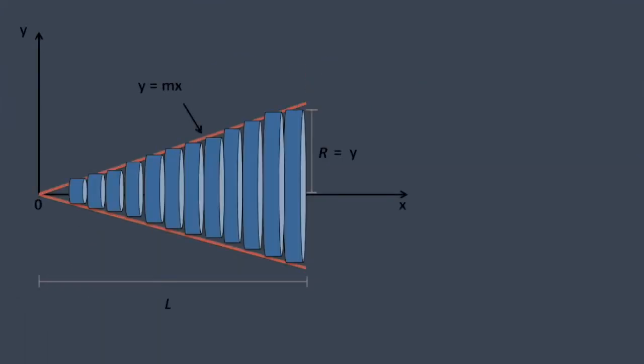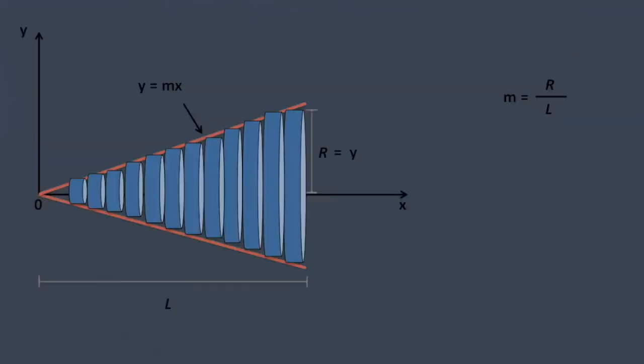A cone is very similar — it's also made up of a bunch of circles stacked together. The only difference is that the circles in a cone are increasing in radius, but that's fine because they increase according to a linear function: y equals mx, where m is the slope. The discs making up the cone are not the same size, so we need to use an integral. We chop the cone into infinitesimally thin discs — each resembling a tiny cylinder — and add up the volume and area of each.